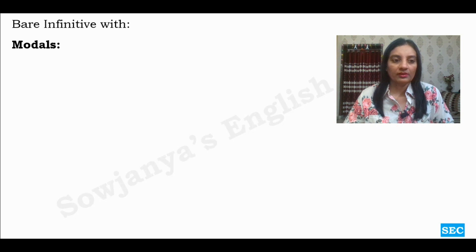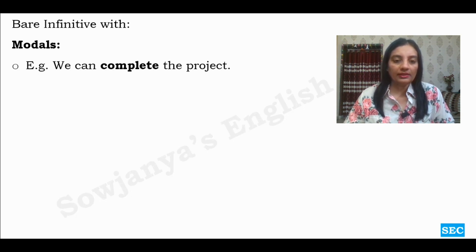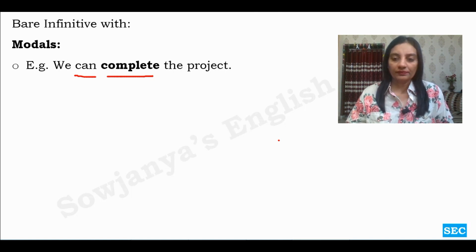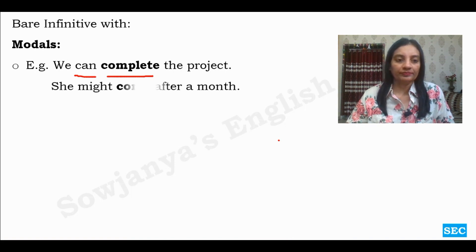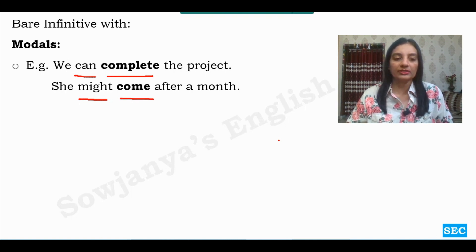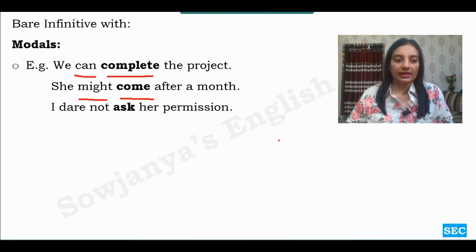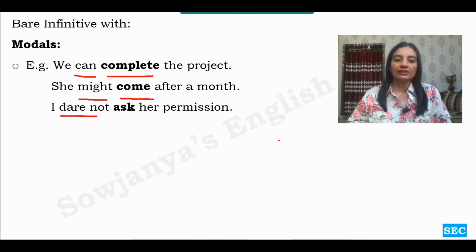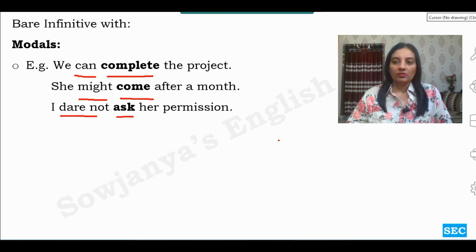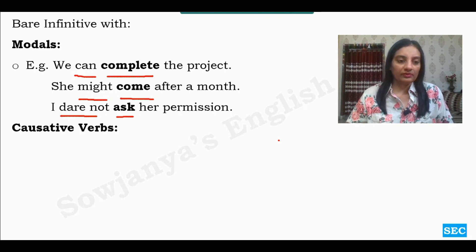Bare infinitive with modals — let's see some examples. 'We can complete the project.' Here 'can' is the modal and 'complete' is our V1 — that is the bare infinitive without 'to'. 'She might come after a month.' 'Might' is the modal and 'come' is the bare infinitive — it is simple V1. 'I dare not ask her permission.' 'Dare not' functions as a modal and 'ask' is our V1.